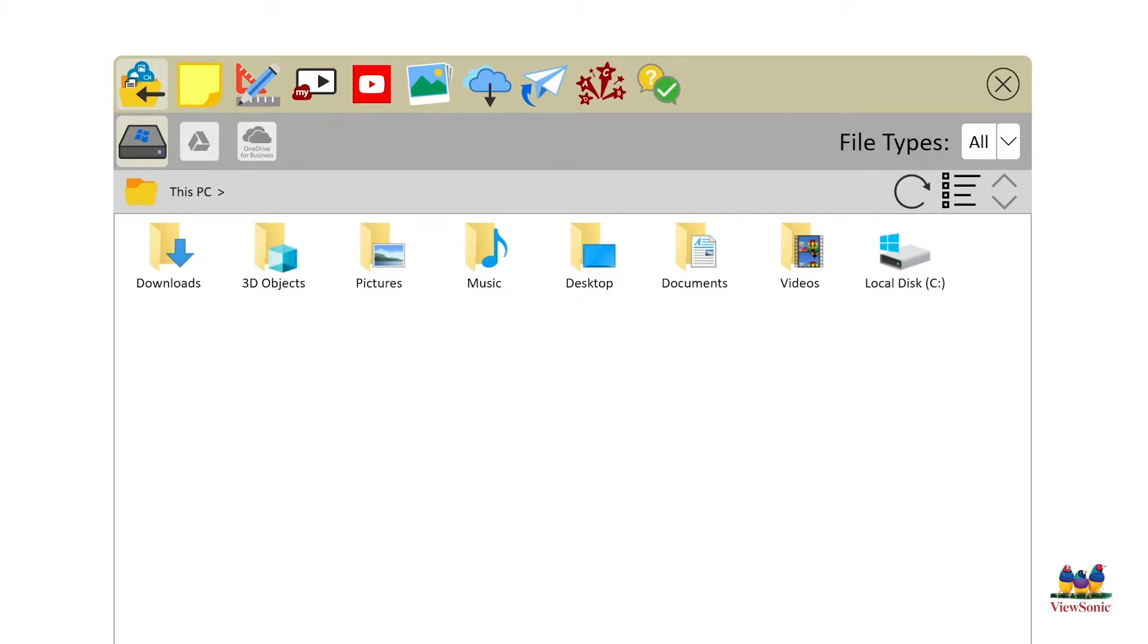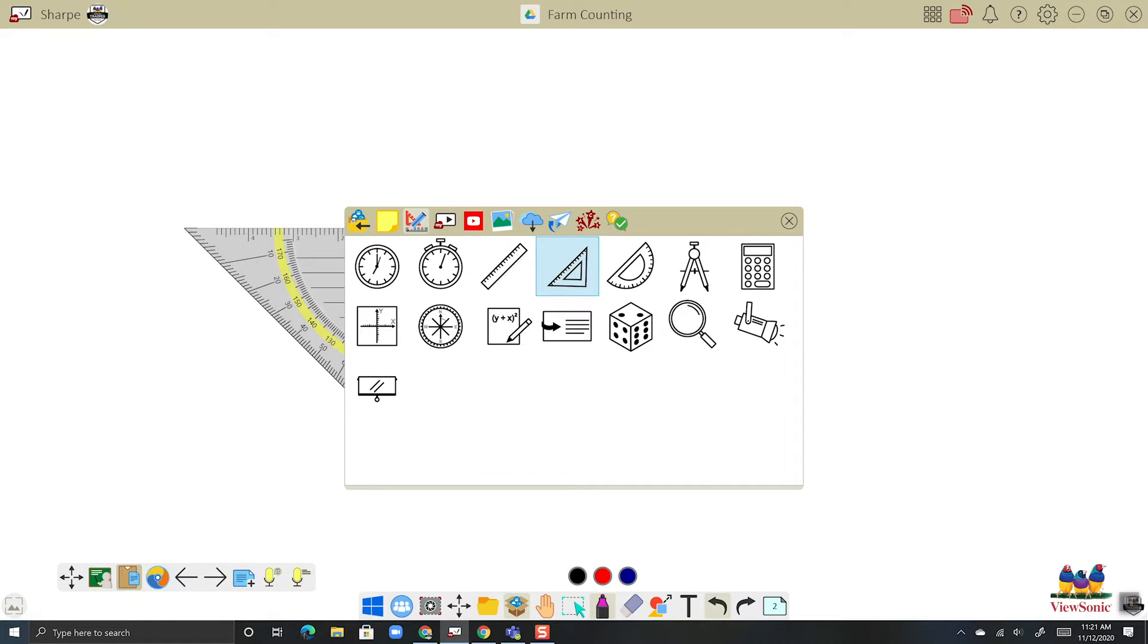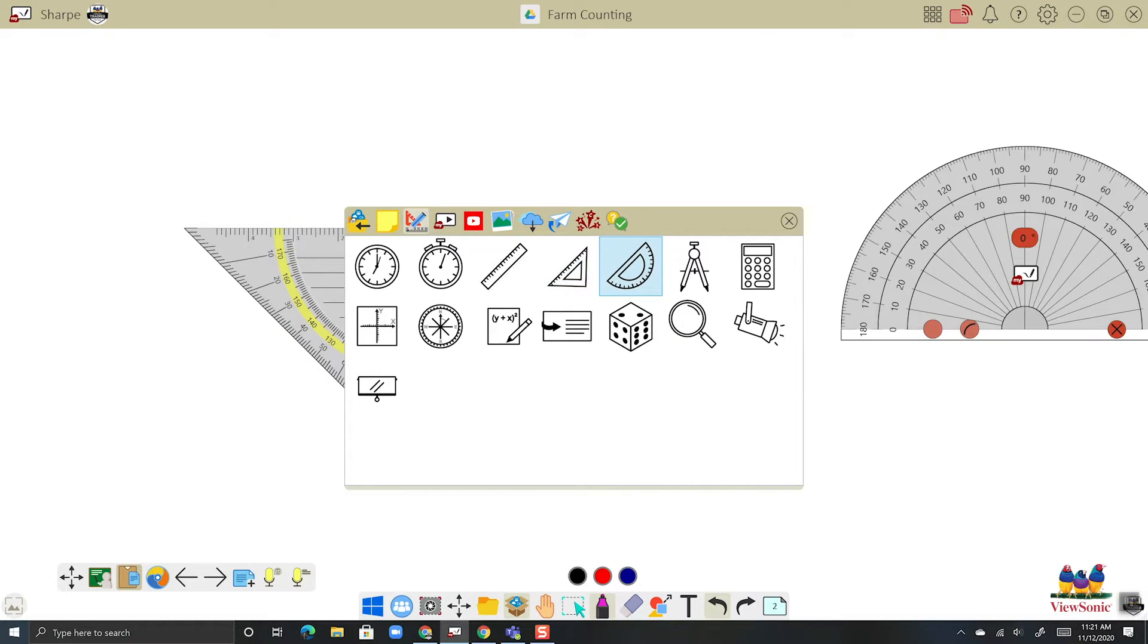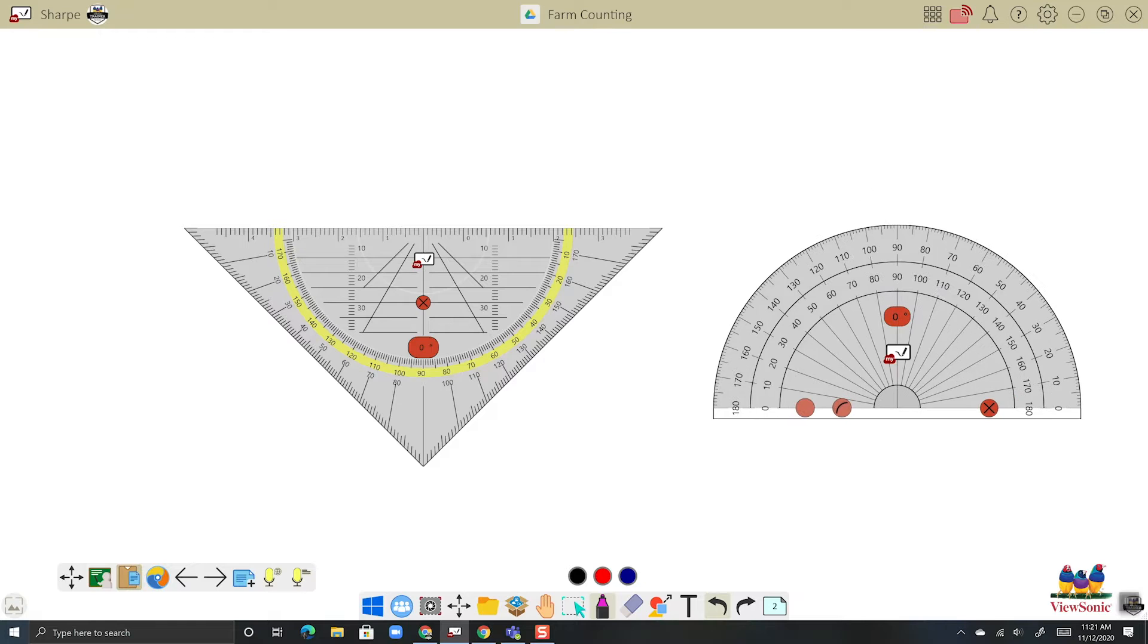Let's look at a couple other tools. Head to the magic box and this time let's add the square and then the protractor. Like the ruler, you can drag the middle to move it around, or if you grab the sides you can rotate it.